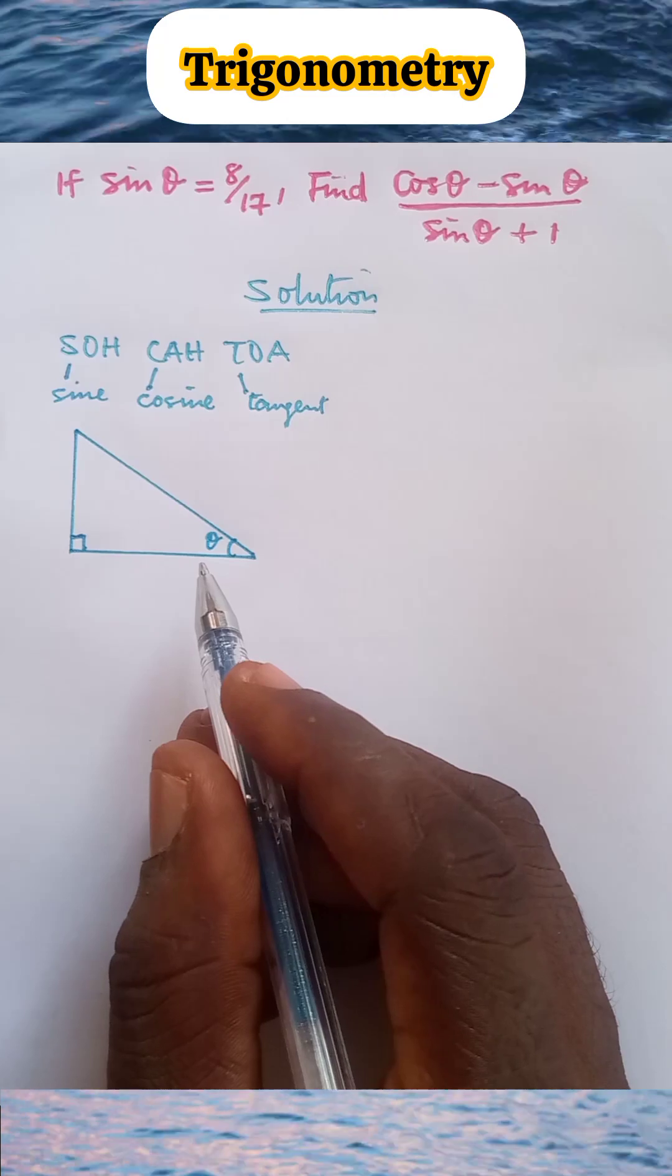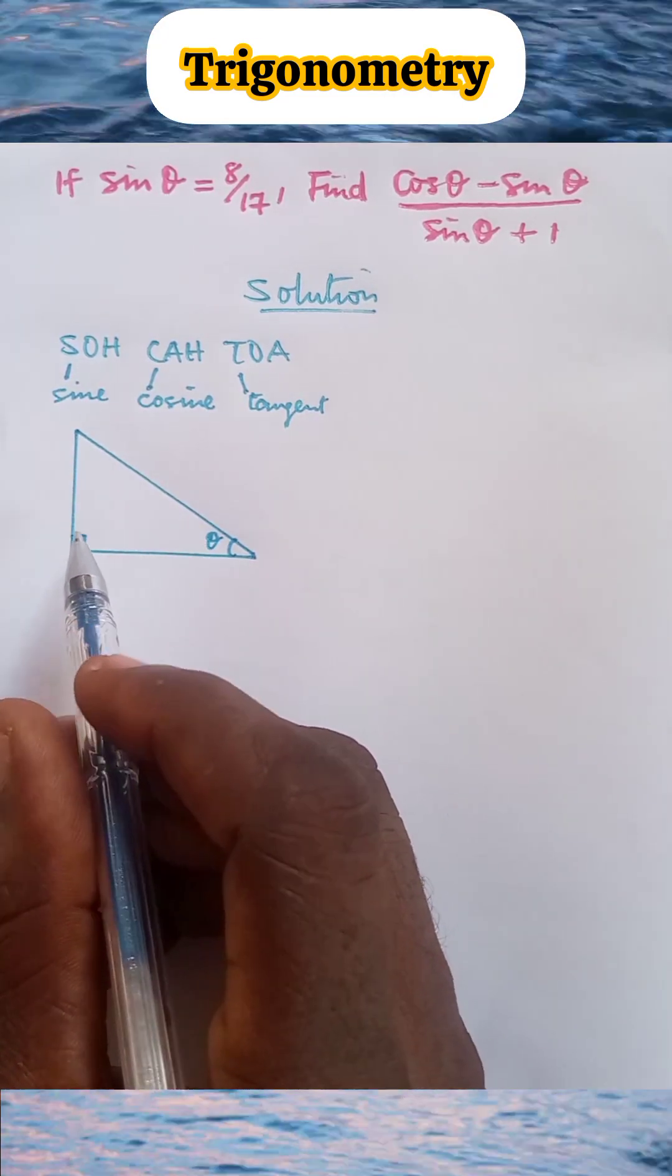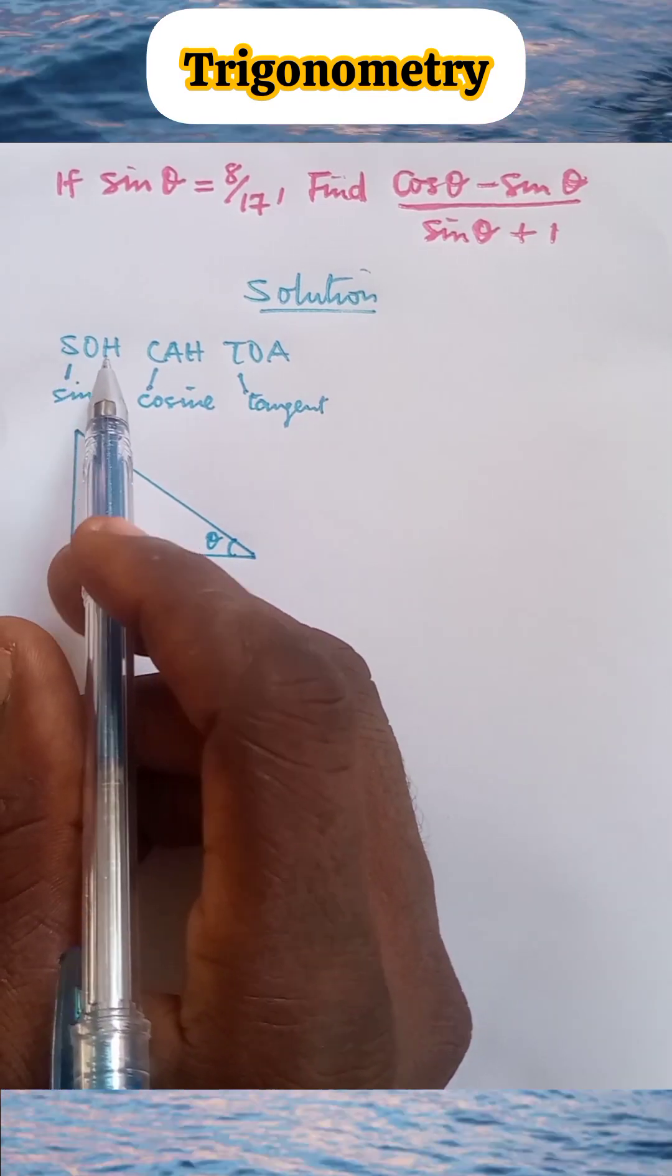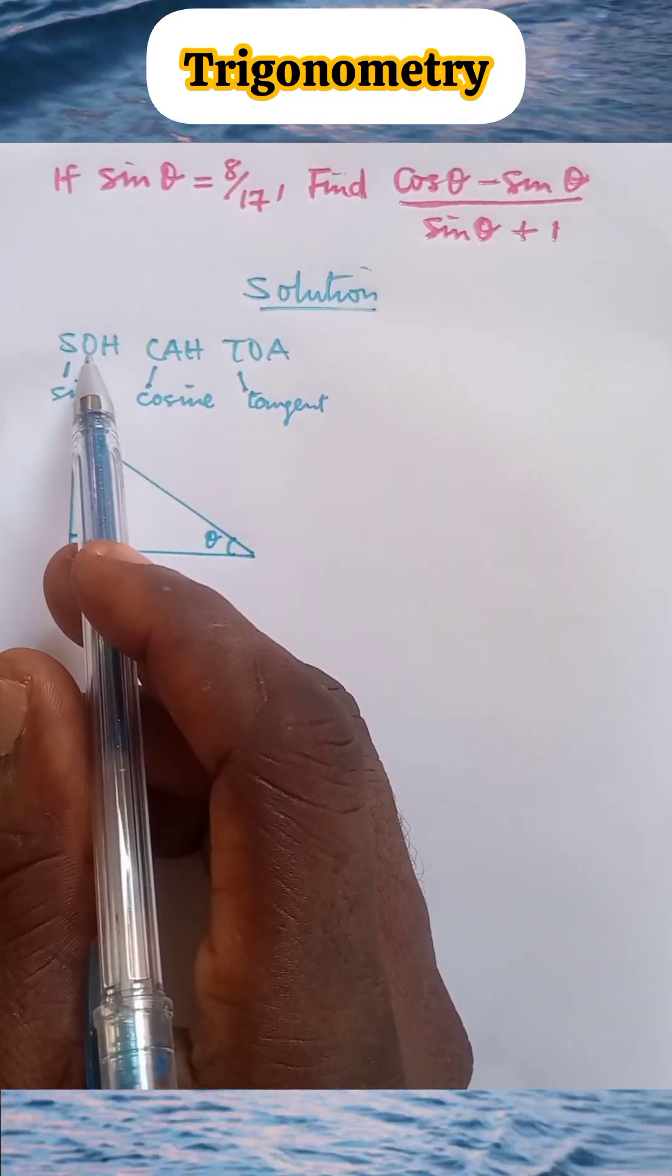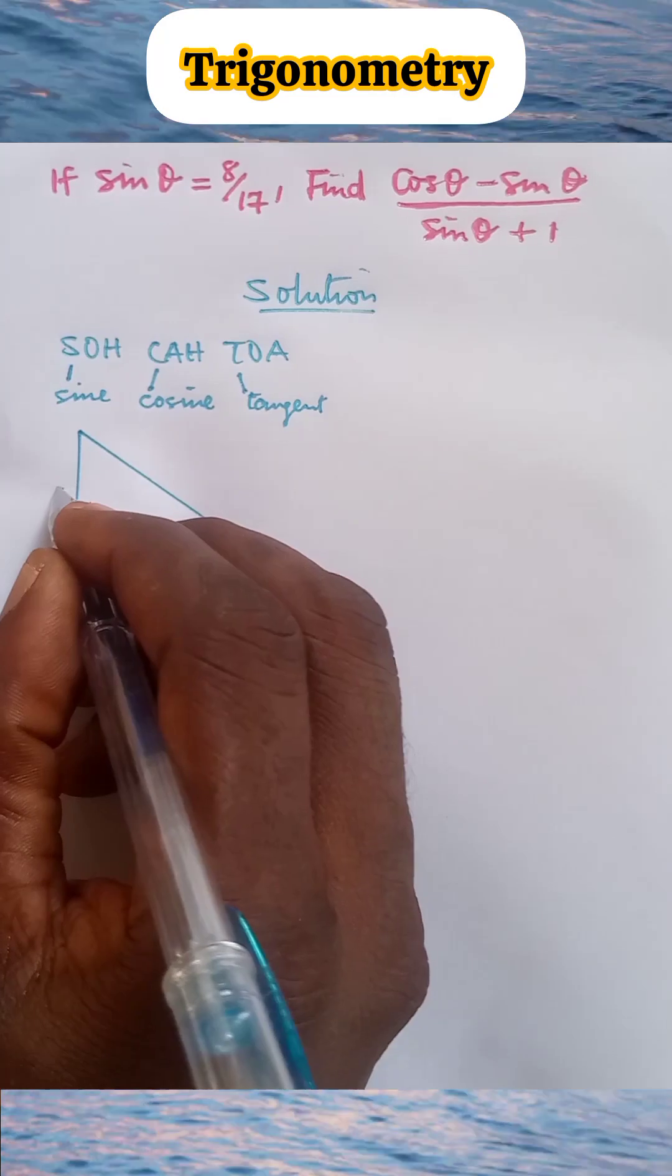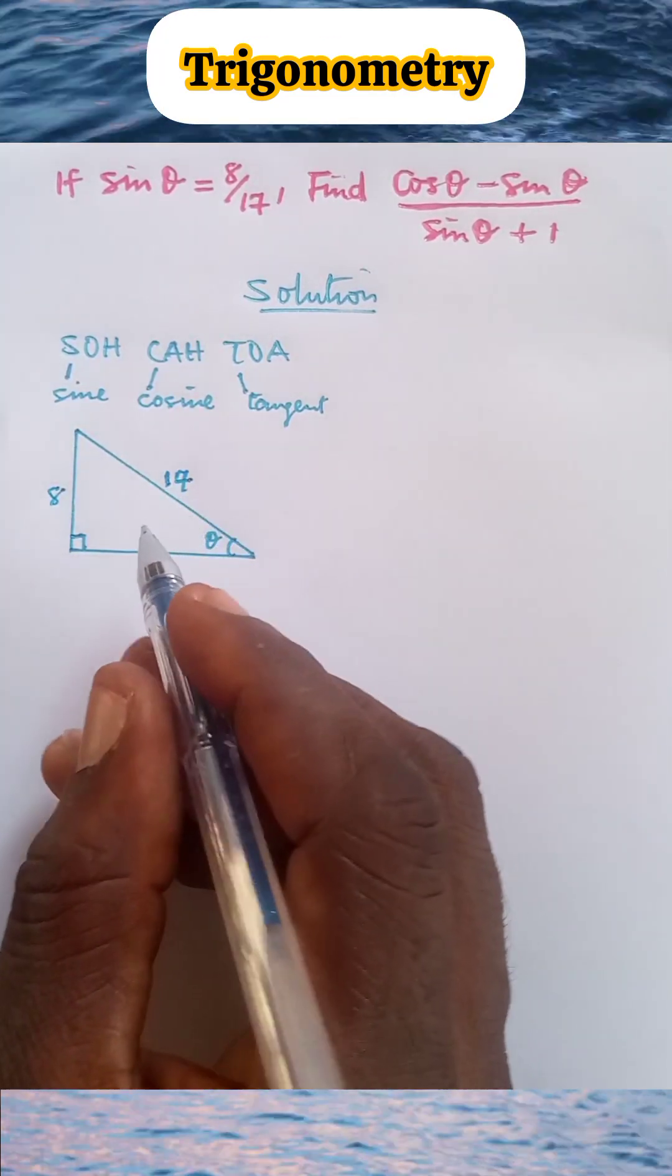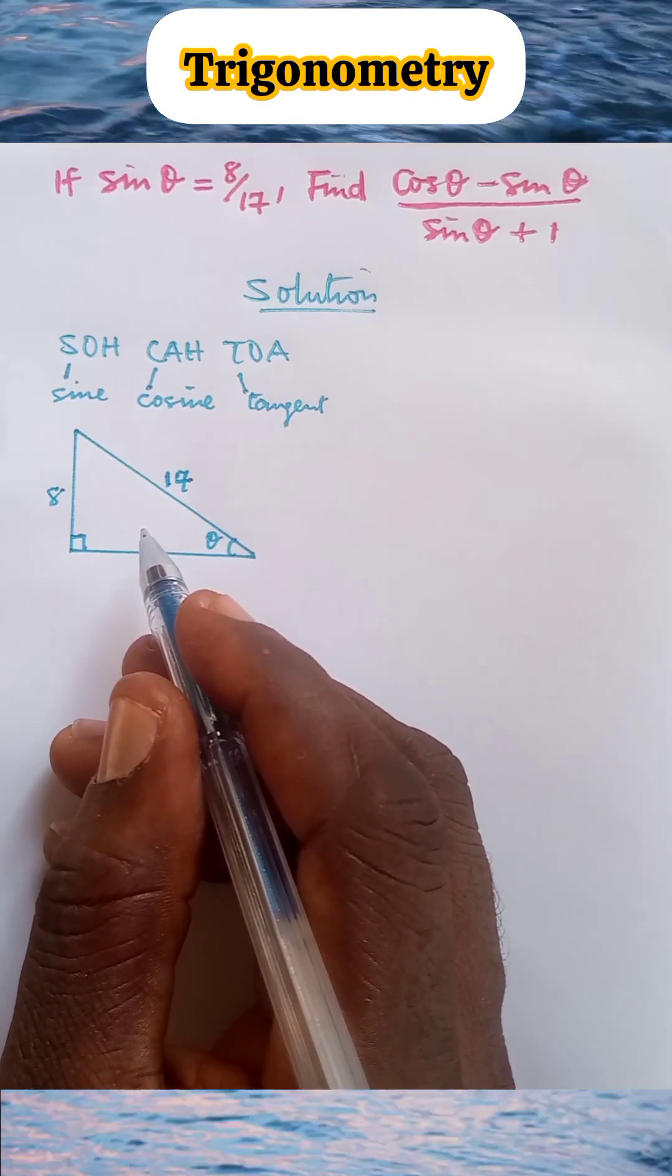Now here is our right angle triangle. Here is the included angle θ and here is 90 degrees. From SOHCAHTOA, we have that sine equals opposite over hypotenuse. And here we have sin θ = 8/17, which means opposite is 8 and hypotenuse is 17. Now we have represented sin θ = 8/17 on this right angle triangle.